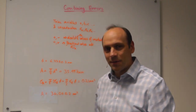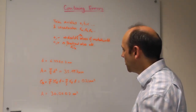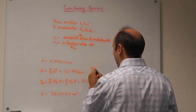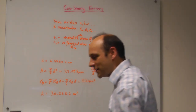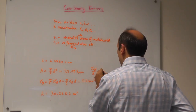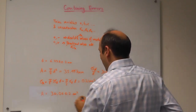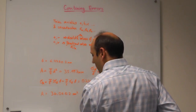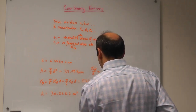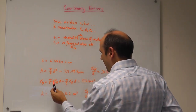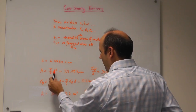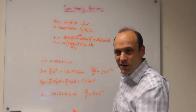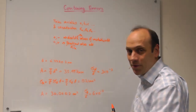As an observation, the fractional uncertainty in d divided by d is 3 times 10 to the minus 3. The fractional uncertainty in the area, sigma a over a, is 6 times 10 to the minus 3. Because you've got d times d, the fractional uncertainties in d add — there are two of them when you multiply together, so the fractional uncertainty doubled in magnitude.